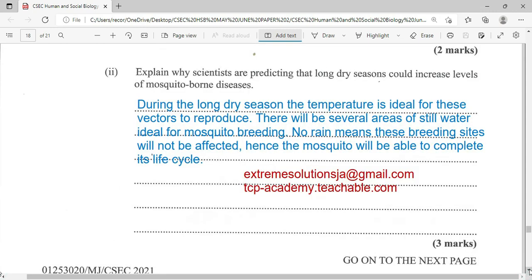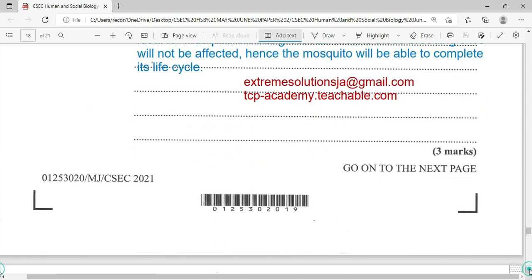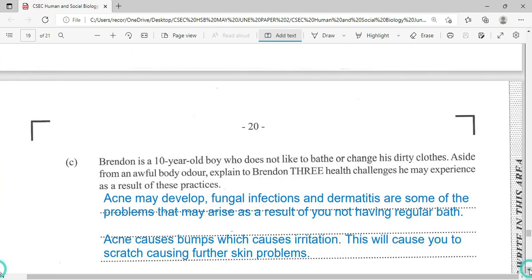Explain why scientists are predicting that long dry season could increase the levels of mosquito-borne disease. This is going to be easy. During the long dry season, the temperature is ideal for these vectors to reproduce. There will be several areas of still water ideal for mosquito breeding. No rain in these breeding sites will not be affected. Hence, the mosquito will be able to complete its life cycle. And as such, we're going to be having more adult mosquitoes giving us trouble. Now, if we were able to break the life cycle by making all these stagnant water be removed or these still water bodies be treated or removed, then of course we'll have less mosquito.